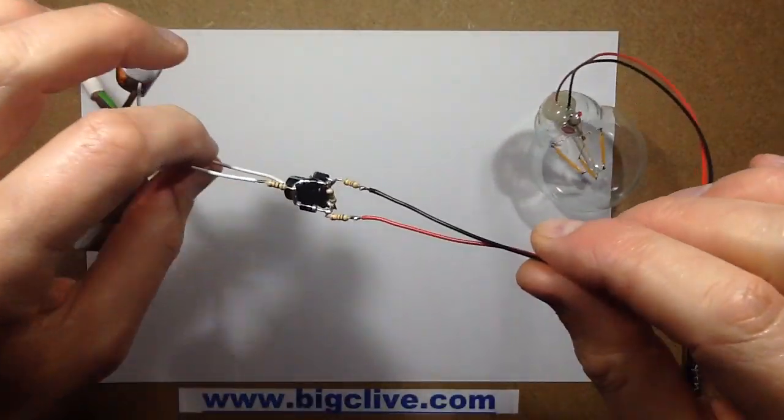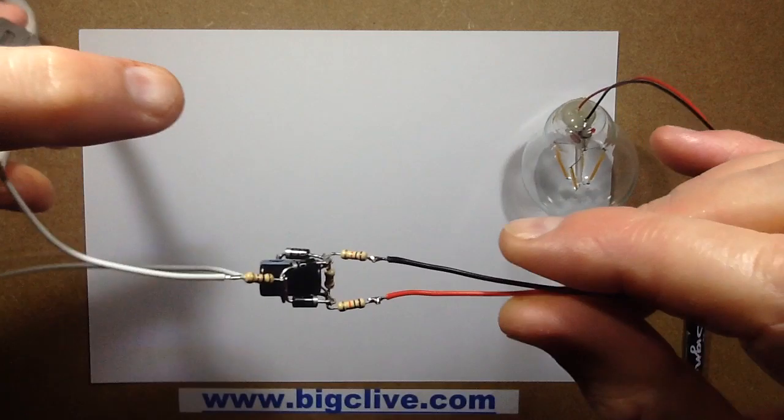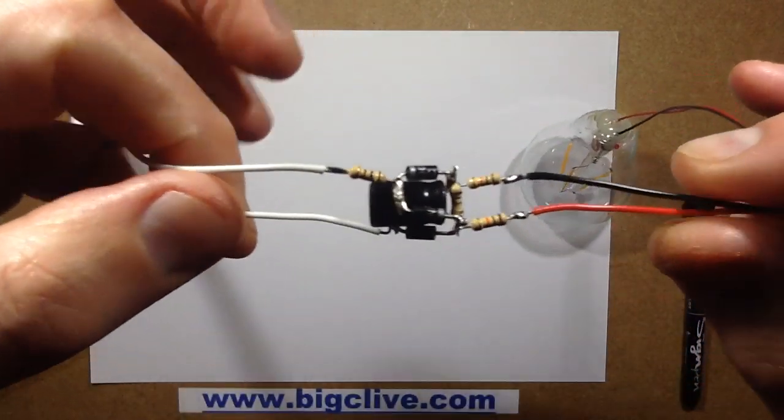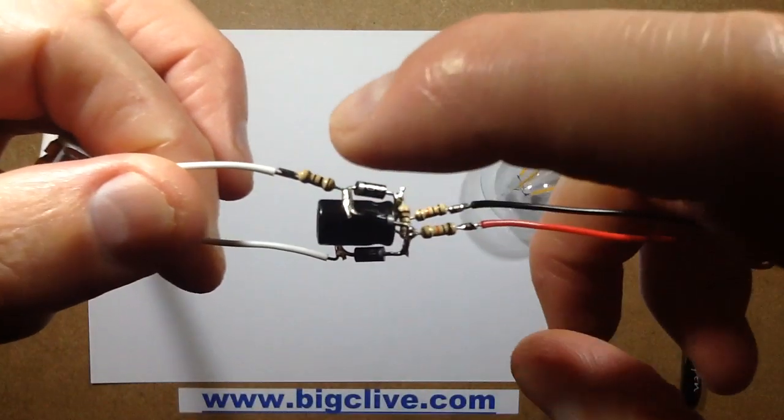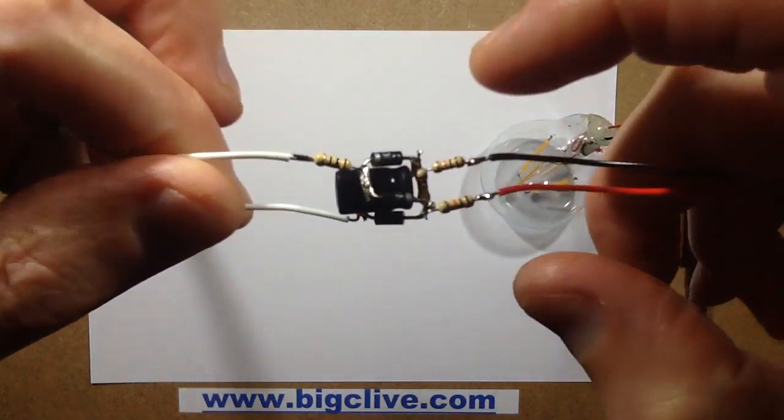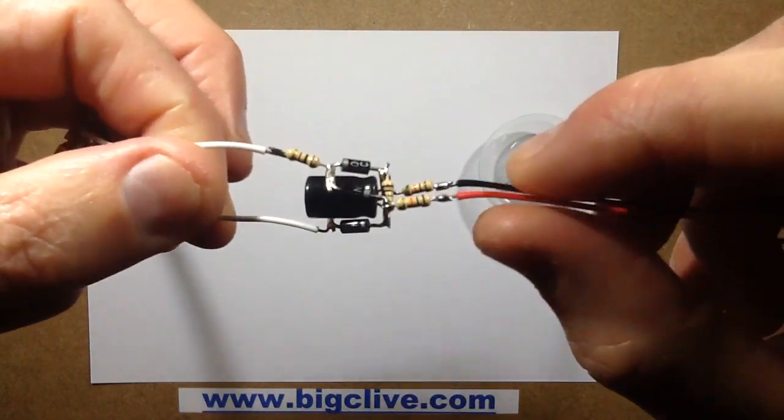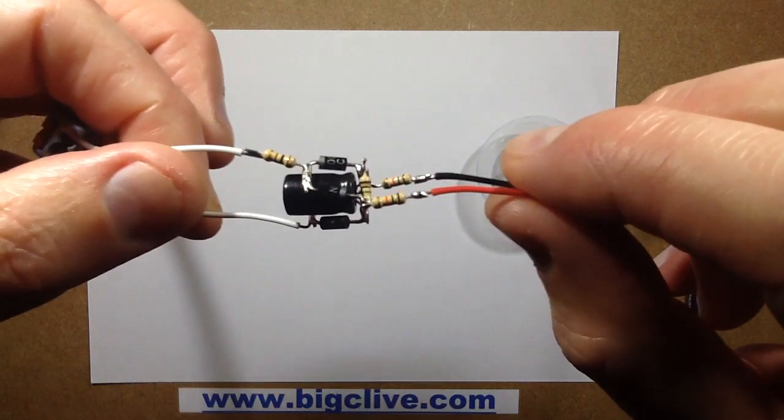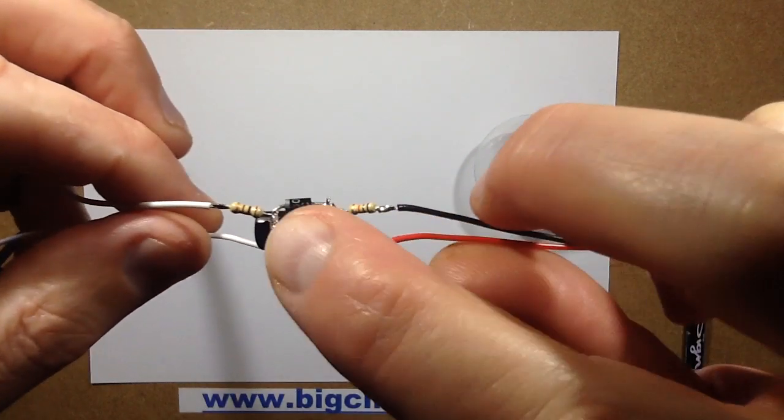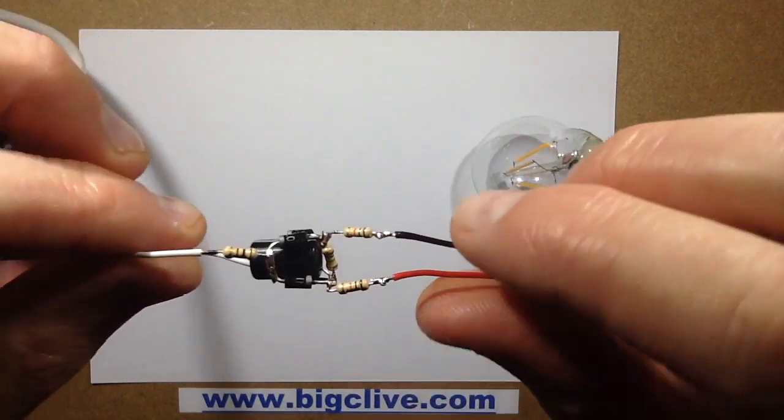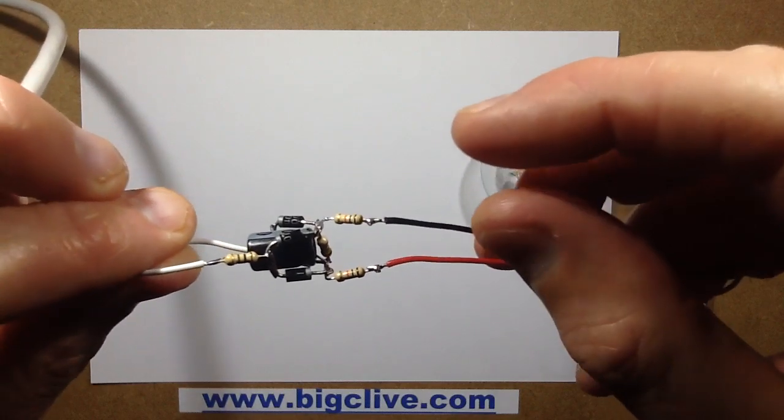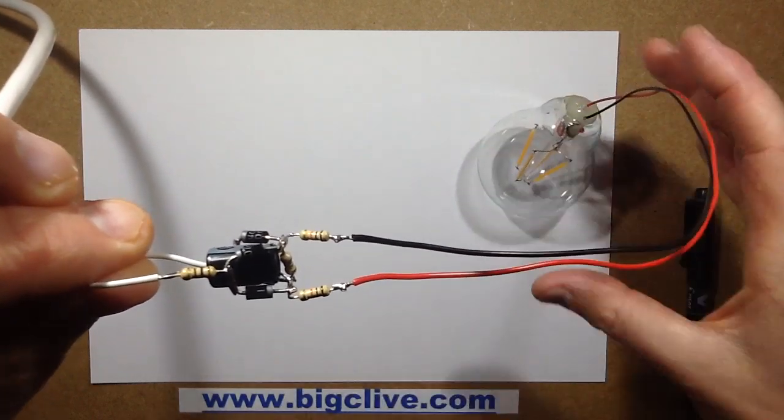So this is based on an inrush limiting resistor, a bridge rectifier formed from discrete diodes, an electrolytic capacitor 4.7µF 400V with a 1MΩ discharge resistor across it, and then two 10kΩ resistors at output. I chose those values after a bit of experimentation.